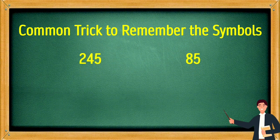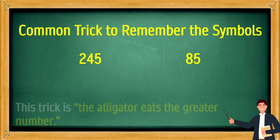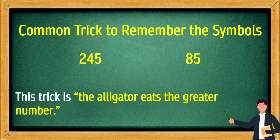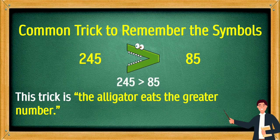Common trick to remember the symbols — 245 and 85. This trick is the alligator eats the greater number. The alligator will eat 245 because 245 is greater than 85.